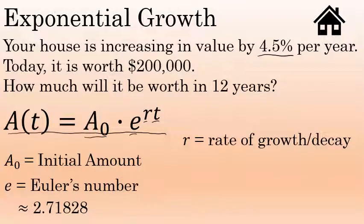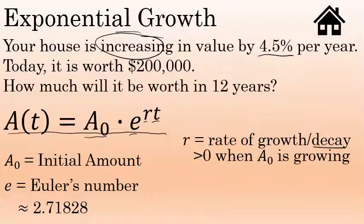r is the rate of growth or decay. In this problem we're talking about something that's increasing in value, something that is growing, but this formula could also be used for something that's going down in value. The rate will be positive, greater than zero when the initial amount is growing, as is the case here, or the rate will be less than zero, negative, when A sub zero is decaying, going down in value, getting smaller.